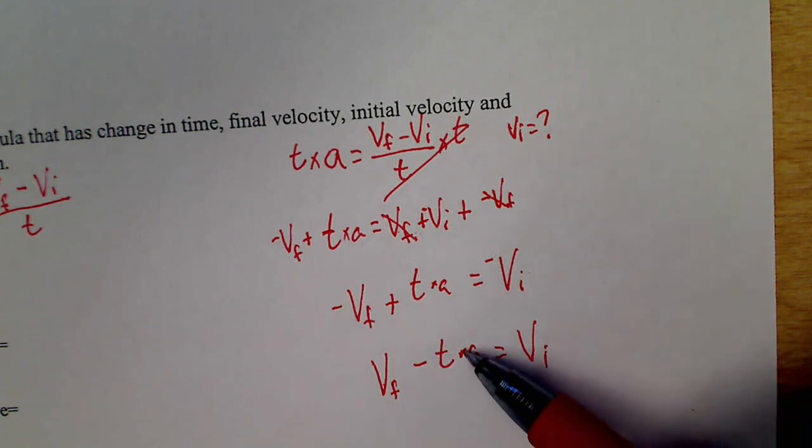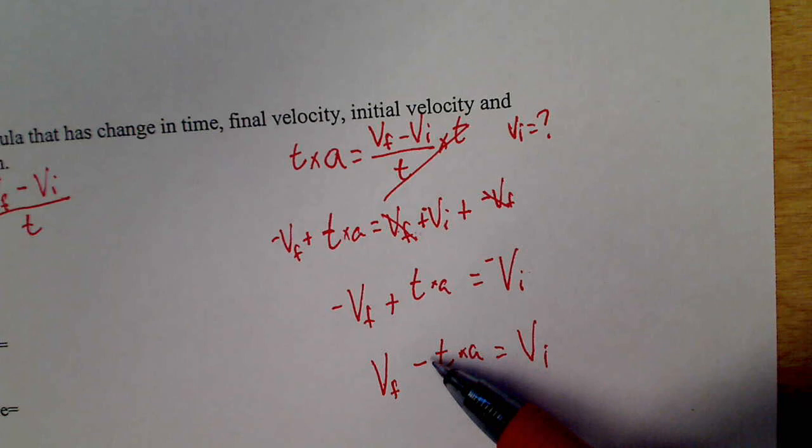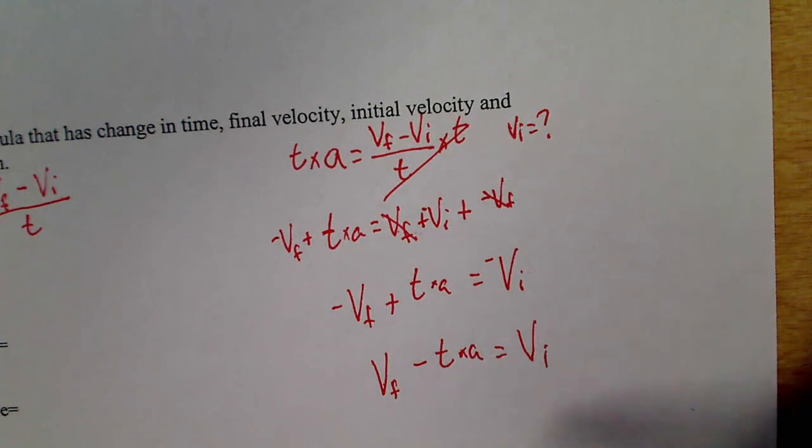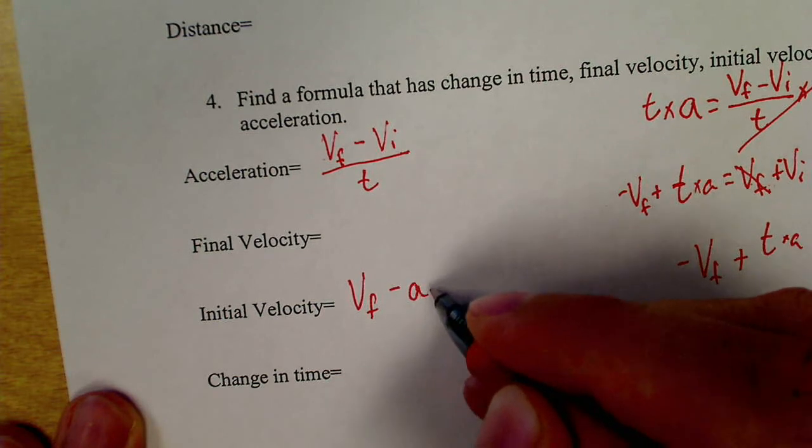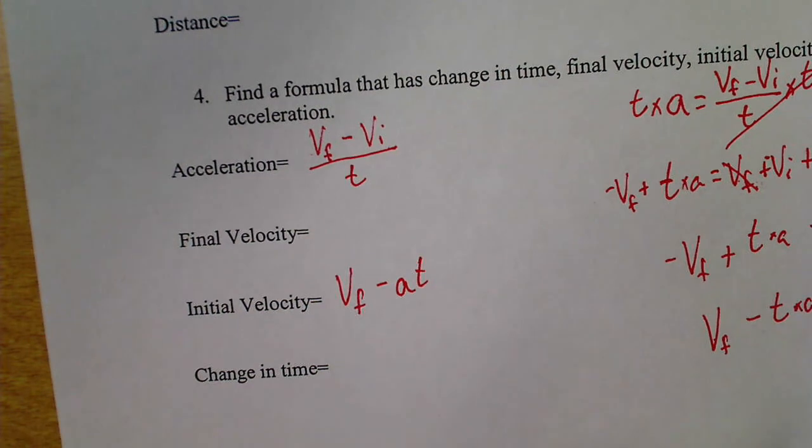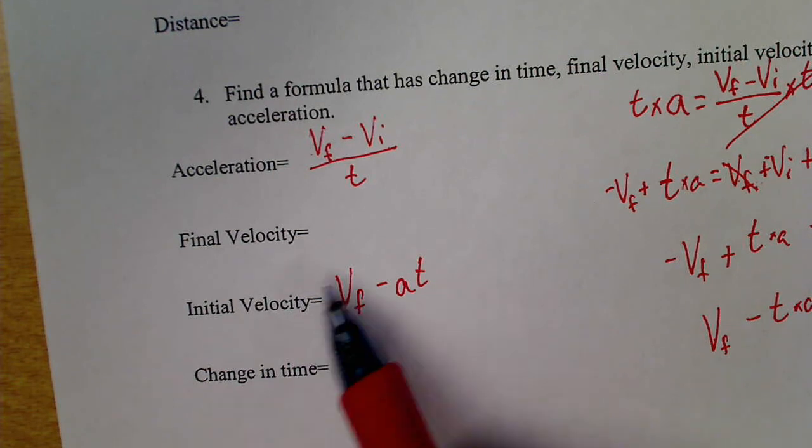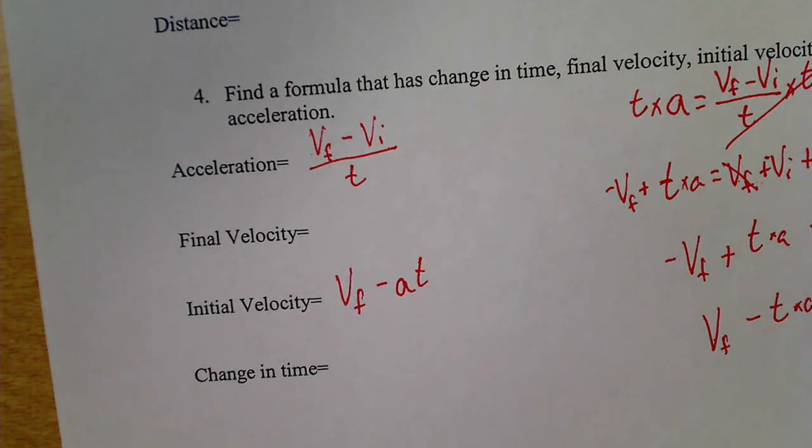VF minus T times A. Now, usually when we write this, we're not going to use this little X for times. We're just going to write them next to each other, and we'll do it in alphabetical order. So, I'm going to write down my answer. It's VF minus AT. The order of multiplication does not matter. That is our answer. This is now a really convenient formula to use if the question is asking me for an initial velocity.